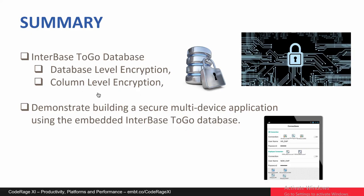This ends this CodeRage Quick Talk. We saw how you can add both database-level encryption and column-level encryption to an InterBase ToGo database, and then how you can build a secure multi-device application using the embedded InterBase ToGo database with both database-level and column-level encryption.